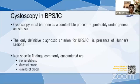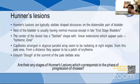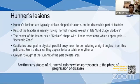Hunner's lesions are typically stellate-shaped structures on the distensible part of the bladder. The rest of the bladder usually has normal mucosa, except in late end-stage bladders. The center of the lesion has a stellate shape with linear extensions appearing as a pale ischemic zone. Capillaries arranged in an atypical parallel array appear to radiate at right angles from this pale area, appearing as a patch of erythema or grayish slough at the summit.